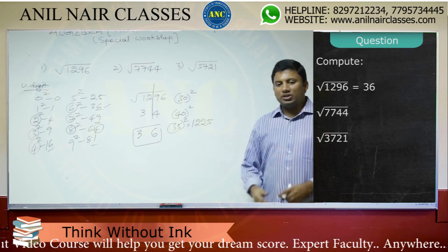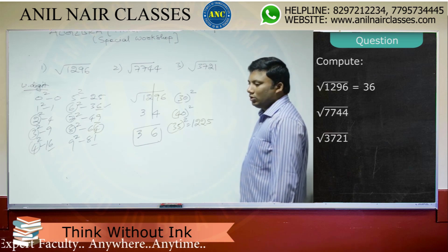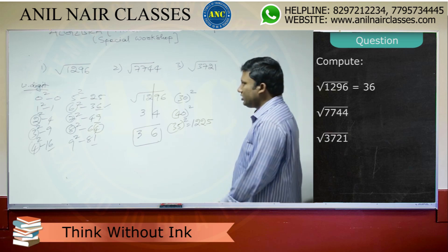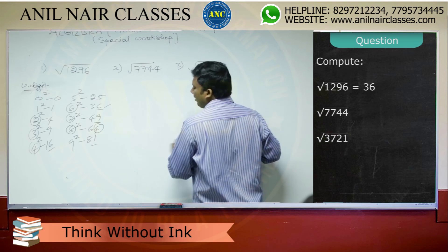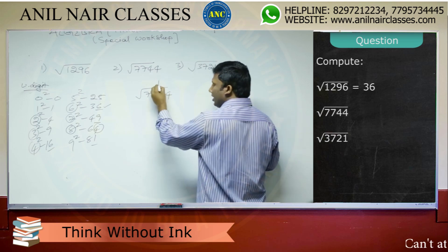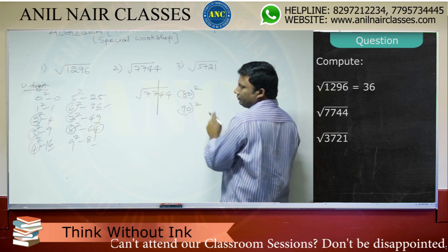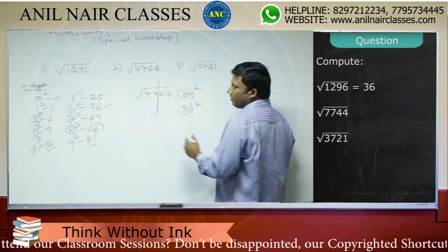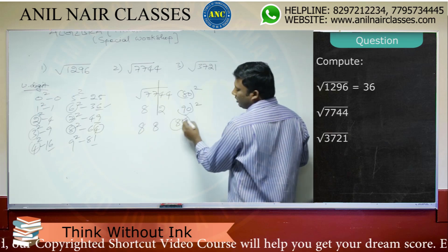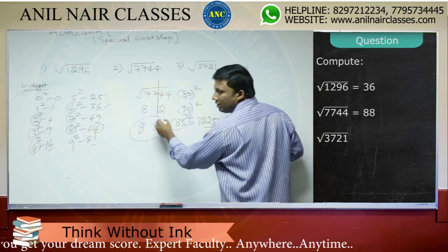Try the next two questions using the same approach. Square root of 7744: keep a slash after two digits — it lies between 80² and 90². It ends with 4, so the answer is 82 or 88. Now, 85²=7225, and 7744 is greater than 7225, so the answer is 88.